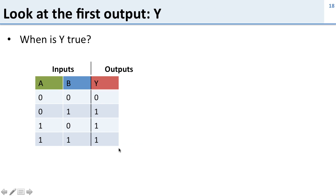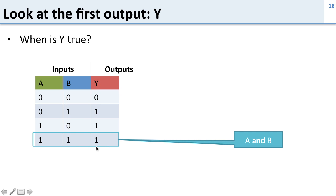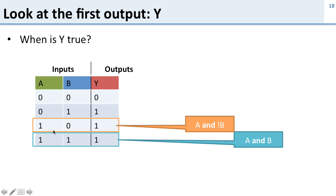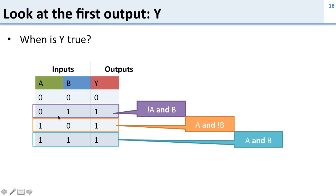Let's take a look at this by first looking at just the y output — what's the equation for y? There are a whole bunch of terms here. Y is true when a and b are both one, so this term is a AND b. Y is also true when a is true and b is false, so this is a AND NOT b. And correspondingly, y is true when a is false and b is true, so that's NOT a AND b.